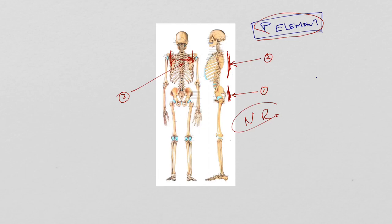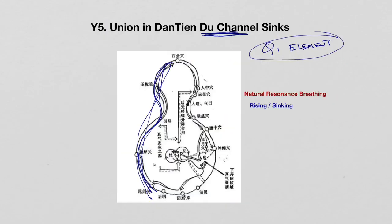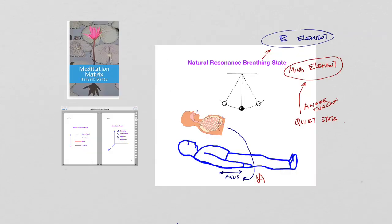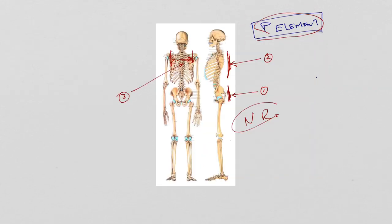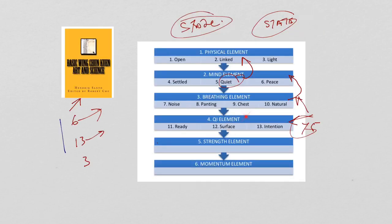So this is from the qi element going down to the breathing element, going down to the mind element, going down to the physical body element. One needs to know, from qi element to the breathing, to mind, to the physical, one is dealing with states.